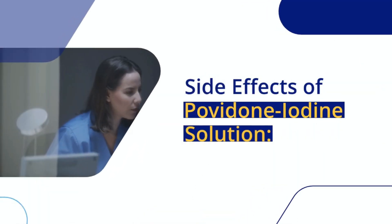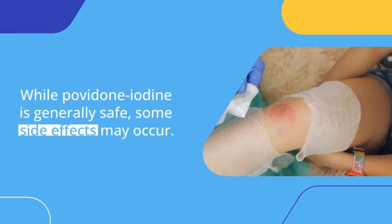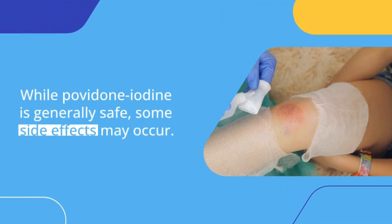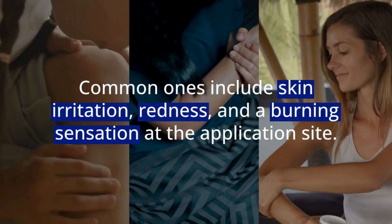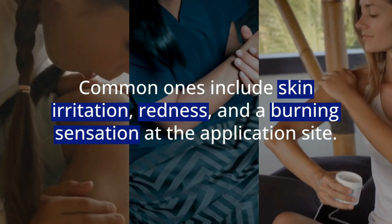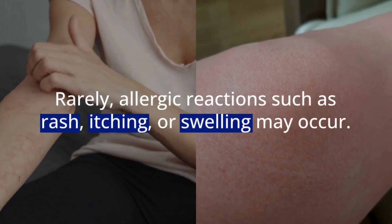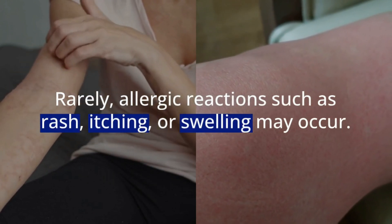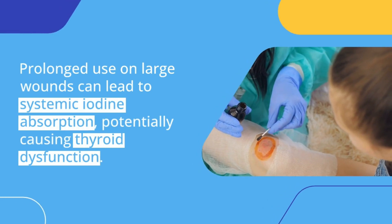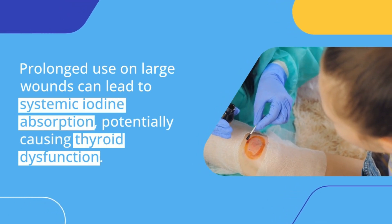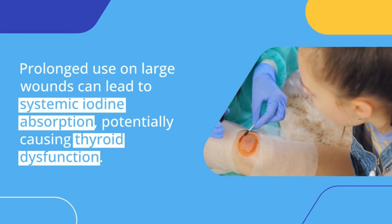Side effects of povidone iodine solution. While povidone iodine is generally safe, some side effects may occur. Common ones include skin irritation, redness, and a burning sensation at the application site. Rarely, allergic reactions such as rash, itching, or swelling may occur. Prolonged use on large wounds can lead to systemic iodine absorption, potentially causing thyroid dysfunction.